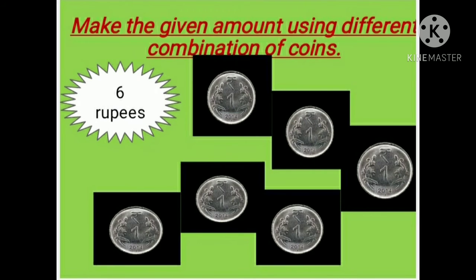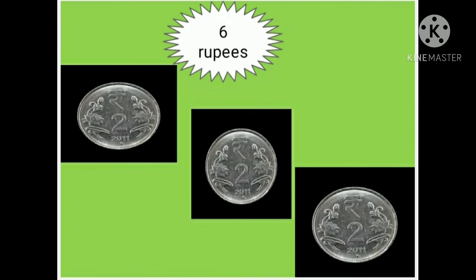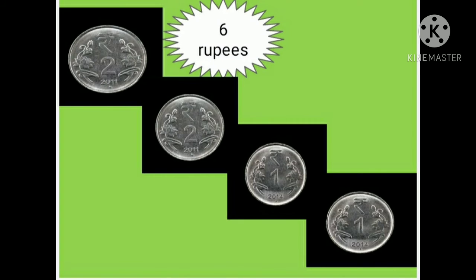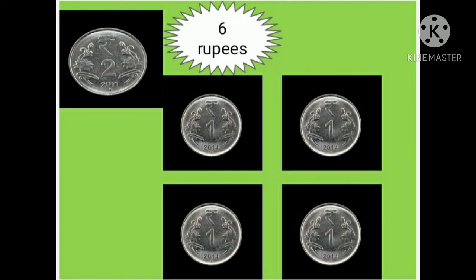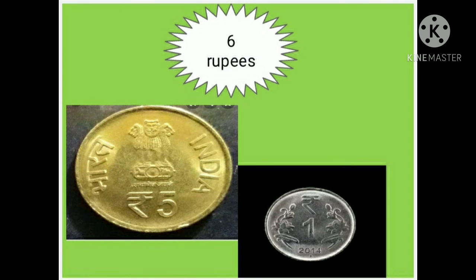Make the given amount using different combinations of coins. To make 6 rupees, we can add 6 one-rupee coins. If we add 3 two-rupee coins, it makes 6 rupees. Add 2 two-rupee coins and 2 one-rupee coins — it makes 6 rupees. If we add 1 two-rupee coin and 4 one-rupee coins, it makes 6 rupees. And if we add 1 five-rupee coin and 1 one-rupee coin, it makes 6 rupees.